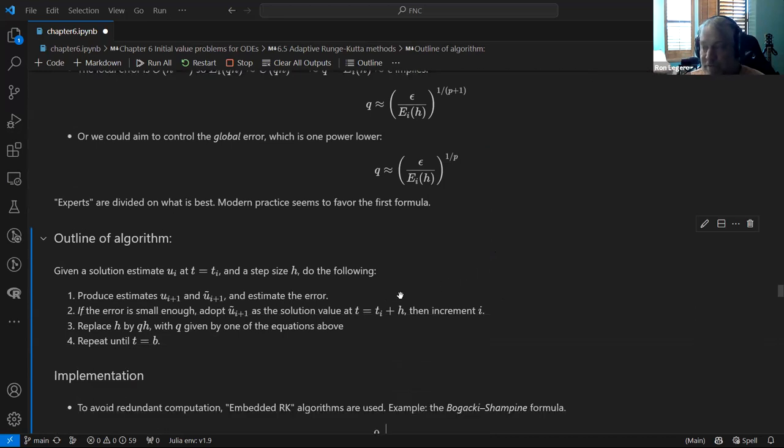In the text, he says this kind of vague statement that experts are divided. I don't know if he took a survey on what is best, but then he also says that modern practice seems to favor this first formula with the one over P plus one. You need to use one or the other of these formulas and make a choice. So the outline of how this should work then for an adaptive algorithm is to first produce estimates, pick some step size H, and then produce your estimate using the two different algorithms, one of a higher order.